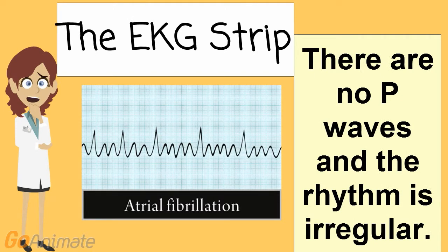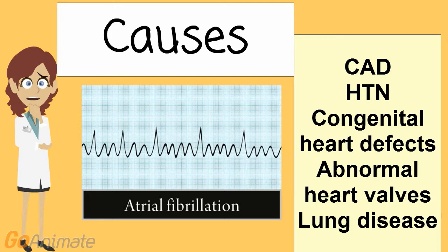When looking at the EKG strip, you're going to find that there are no P waves and the rhythm is irregular — we usually call it irregularly irregular. The actual causes of atrial fibrillation include coronary artery disease, hypertension, congenital heart defects, abnormal heart valves, and lung disease.